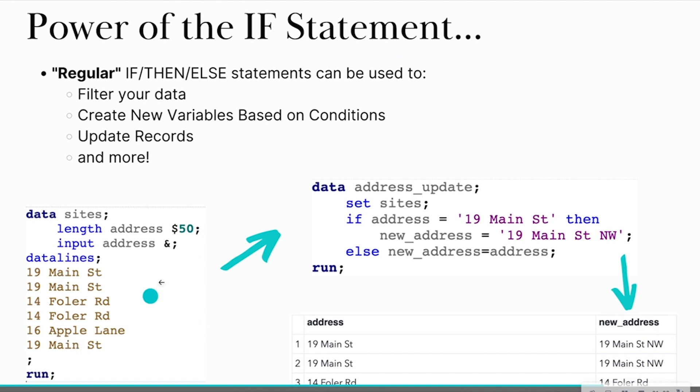So as you can see on the left-hand side of the screen, I have created a data set called Sites where I have address information. This means to put everything on a single line. I only want one column called Address. So once I run this piece of code, I then am able to use a conditional statement like an if-then-else statement to update this data set. So in this case, I am saying if that address is equal to 19 Main Street, then the new address is equal to 19 Main Street Northwest. Else, just fill in the address as is.